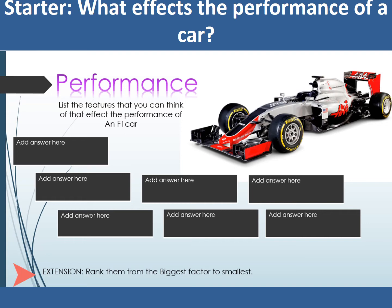Hopefully you should have figured out that there are a lot of different things that could affect performance. This could be the driver's ability, aerodynamics, the tyres, and there are lots of different things that can affect this. In this lesson we're specifically looking at the main factors that affect CPU performance. There are other factors but we're thinking about the three top factors.